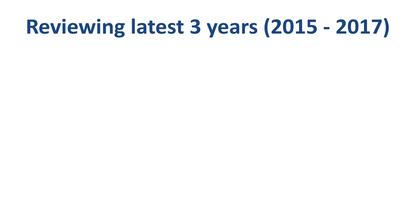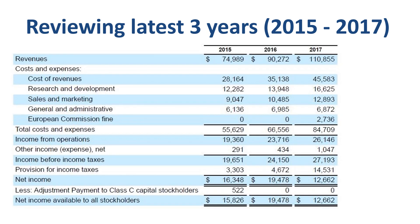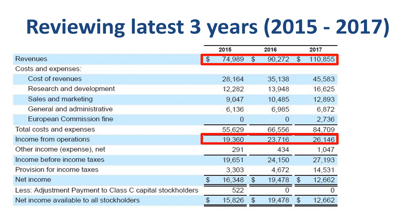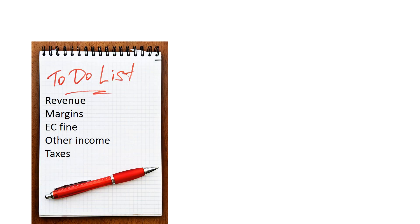Fifth item is the provision for corporate income taxes, which looks unusually high at more than half of earnings before taxes. Now that we have compiled the to-do list of five key items, let's look at the latest three years of Alphabet Inc's income statement. We see very strong revenue growth of more than 20% two years in a row. Income from operations is not growing at the same rate as revenue in 2017 — the European Commission fine is likely an important driver. Net income in 2017 is lower than in 2016, with the provision for income taxes being around $10 billion higher. This three-year look confirms the to-do list: revenue, margins, European Commission fine, other income, and taxes.